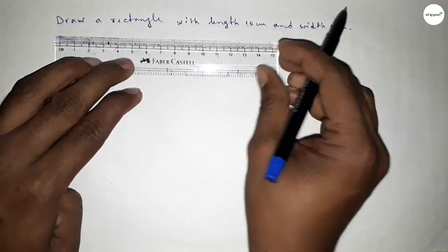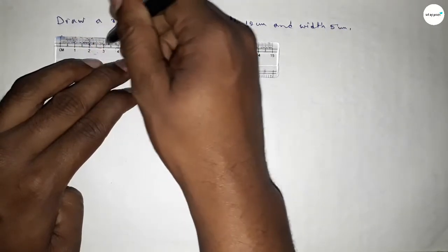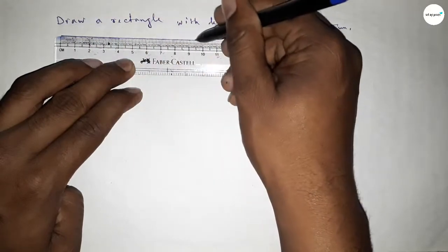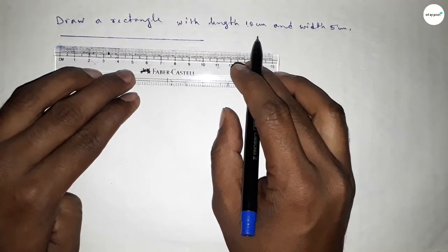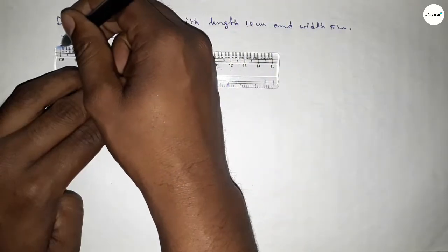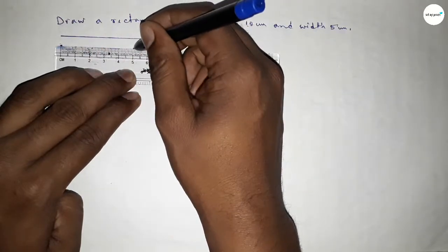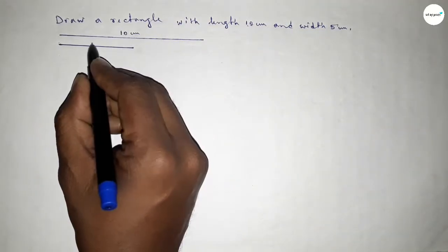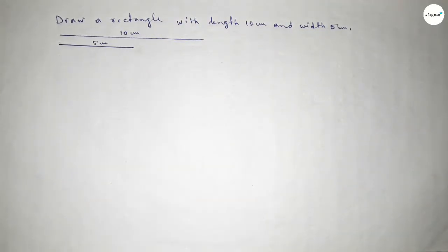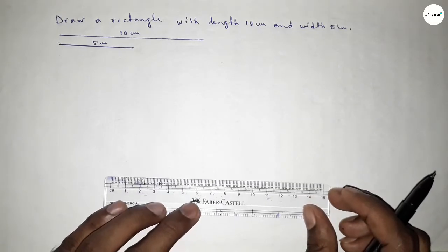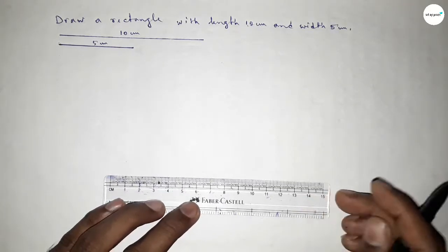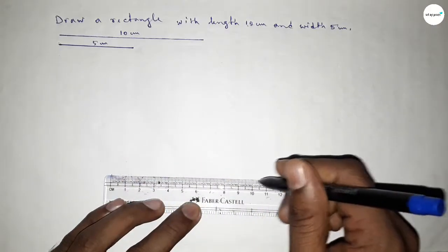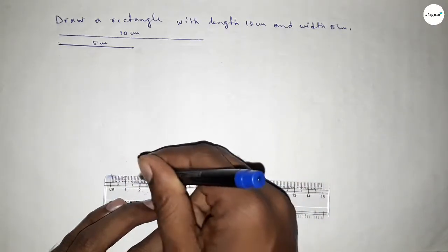First of all we have to draw a line of length 10 centimeter. Next, drawing another line of length 5 centimeter. So this one is 10 centimeter and this one is 5 centimeter. Now we have to draw a line of length 10 centimeter — 0, 1, 2, 3, 4, 5, 6, 7, 8, 9, 10 — so this is 10.